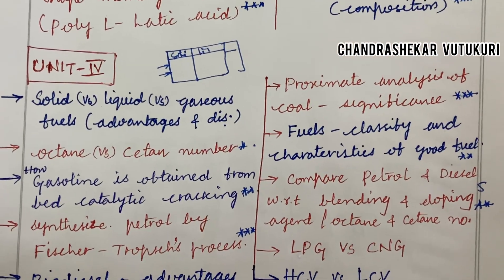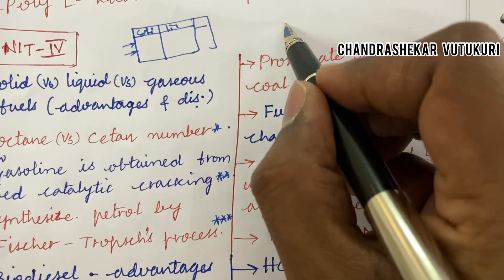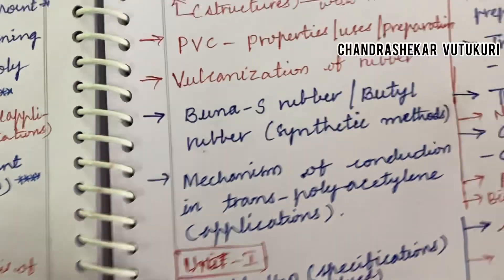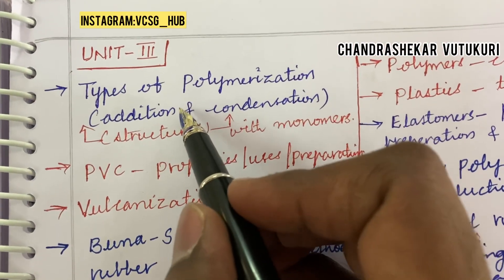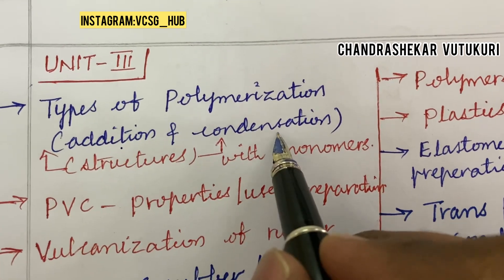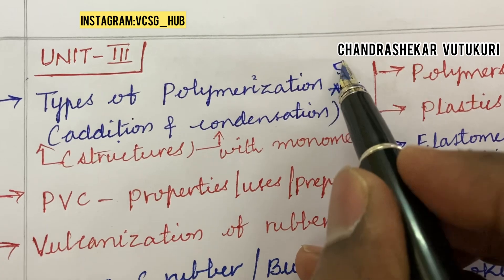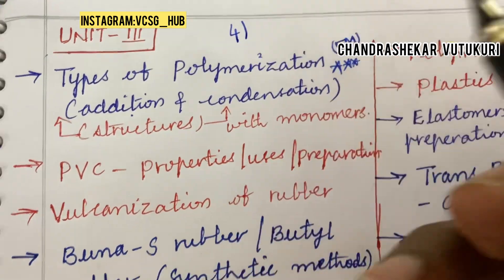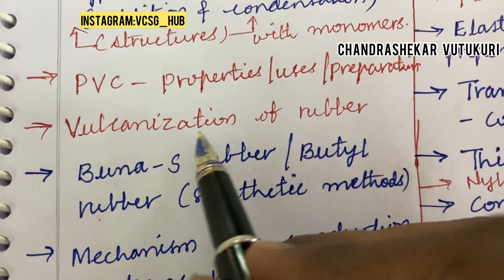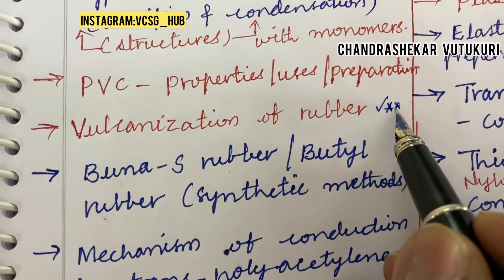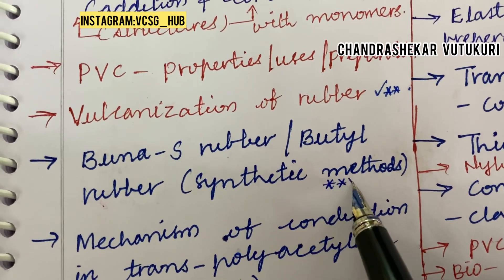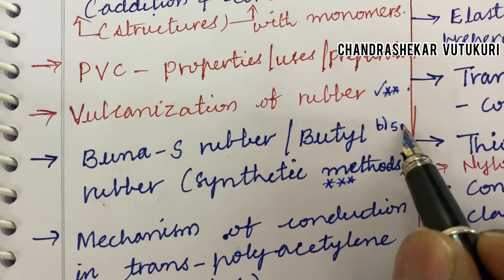Short questions carry 1 mark and long questions are 10 marks — but do not expect a direct 10-mark question; it is a split of 5 and 5. For Unit 3, it is all about polymerization types — addition and condensation — and the structure with monomers. This is said to be a topmost 5-mark question, which may be question 4. PVC — its properties, uses, and preparation — and vulcanization of rubber are also topmost questions. Buna rubber, butyl rubber, and their synthetic methods may also be a topmost question, appearing in 4B for 5 marks.